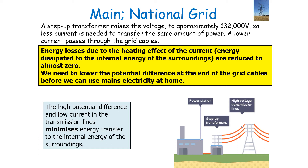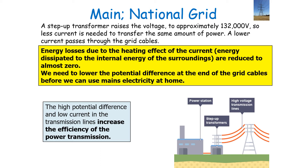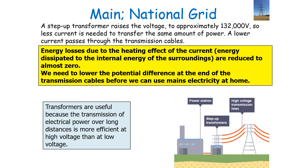The high potential difference and low current in the transmission lines minimizes the energy dissipation to the internal energy of the surroundings — that is, it increases the efficiency of power transmission. Transformers are therefore useful because the transmission of electrical power over long distances is much more efficient at a high voltage than a low voltage.